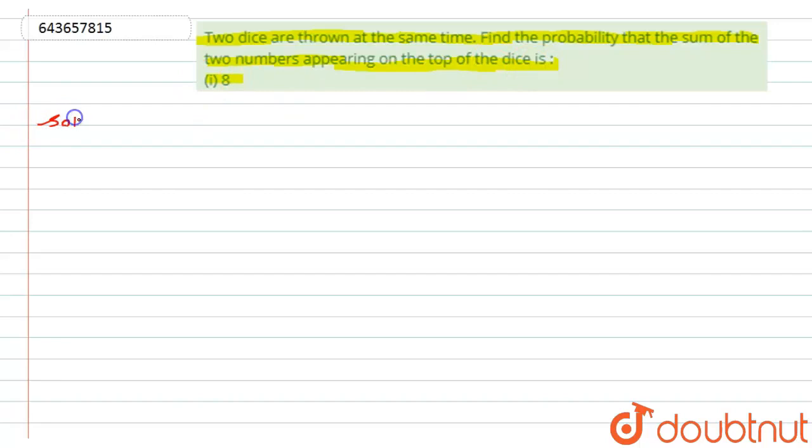In the question we have given the two dice are thrown at a time. So here we have to find the probability of getting the sum of two numbers. The sum of the two numbers appearing on the top of the dice is 8. So for that, first of all, I need to find the possible outcomes.